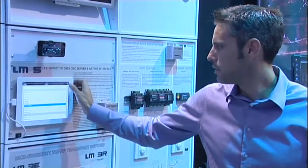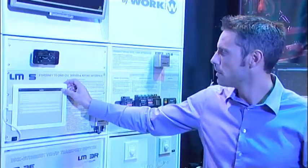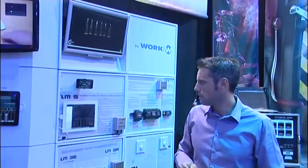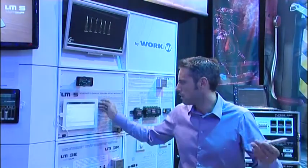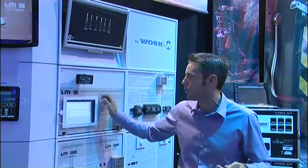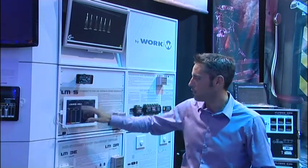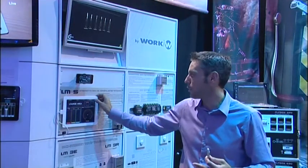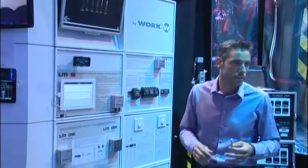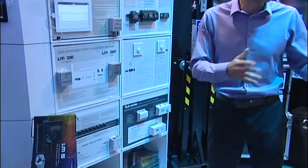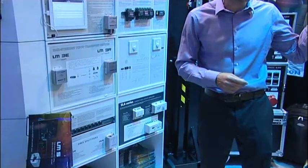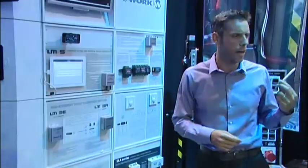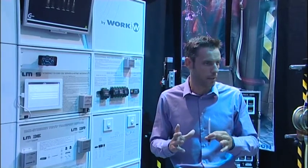We can have RGB working — for example, two zones of RGB. Depending on the application, for a bar, if we want to leave this place for the barman, they don't have to touch anything, just RGB. Or even for audio, because we have some audio amplifiers controlled by DMX. Back in 2010 here we received an Innovation Award nomination for our ceiling speaker controlled by DMX.